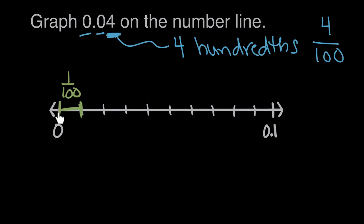So if one of these lengths is 1 hundredth, and we want to go 4 hundredths, then we're gonna need to go 4 of these lengths. 1, 2, 3, 4 of these lengths would be 4 of the hundredths, or 0.04.